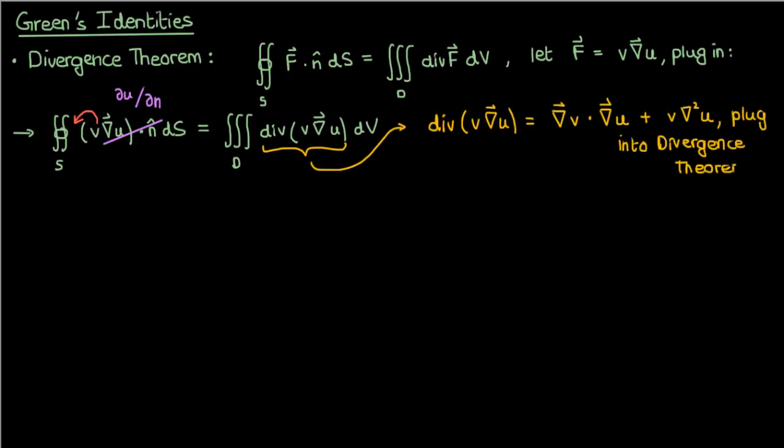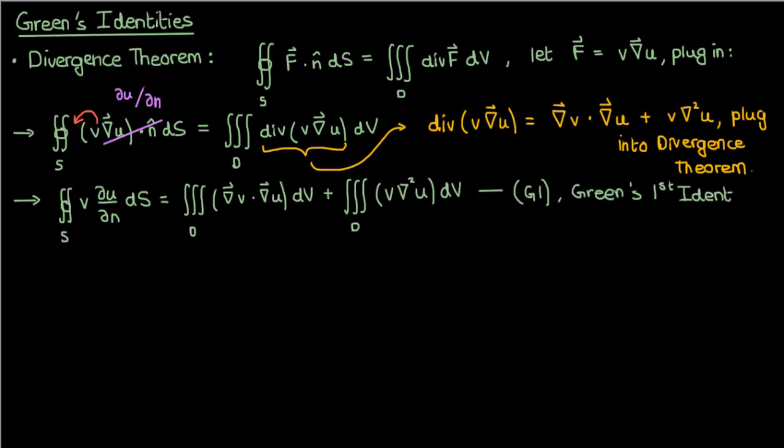Let's now plug this into the divergence theorem expression on the right. The resulting equation that we get is called Green's first identity, and I'm going to label it as equation g1.